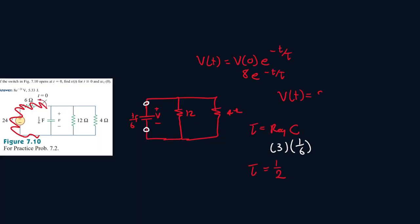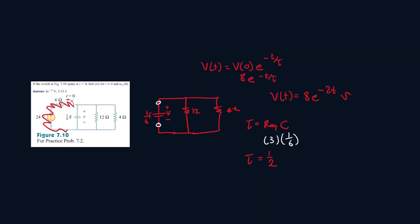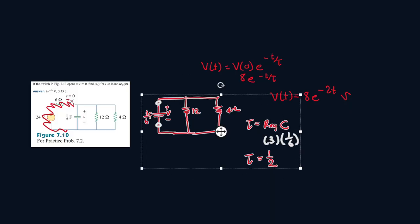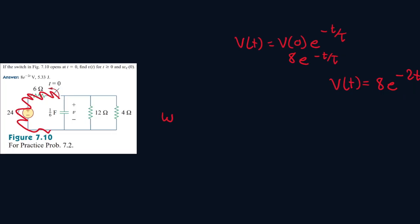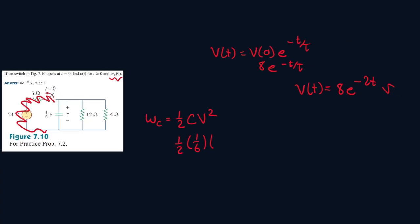So vt is equal to 8e to the power of t over 1 over 2, which is just 2t volts. And now we can solve for the next part, which is asking us to find the energy stored at t equals zero. So the energy for the capacitor is equal to 1 over 2 times the capacitance value times v squared. And since it's at t equals zero, it will be 1 over 6. And so when t equals zero, voltage was 8 volts. So it will be 5.333 joules. And that's your final answer.